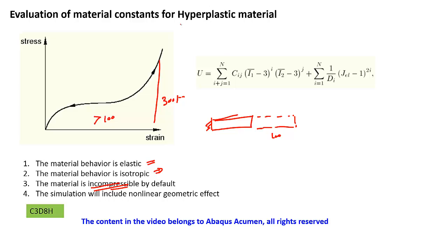When you talk about hyperelastic material there is also something like elastomeric foam, which is compressible — not incompressible. Elastomeric foam is compressible, and then you have to use a compression parameter. Since this is all non-linear behavior you need to include the non-linear geometric effect. For a hyperelastic material model you cannot model this in terms of E or Poisson's ratio or a stress-strain curve.